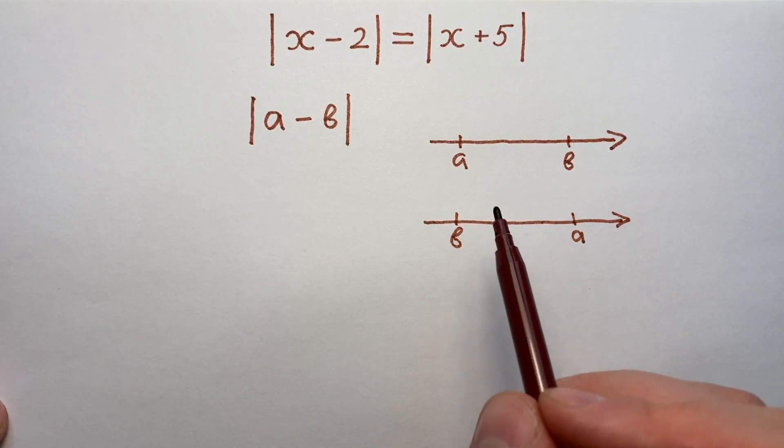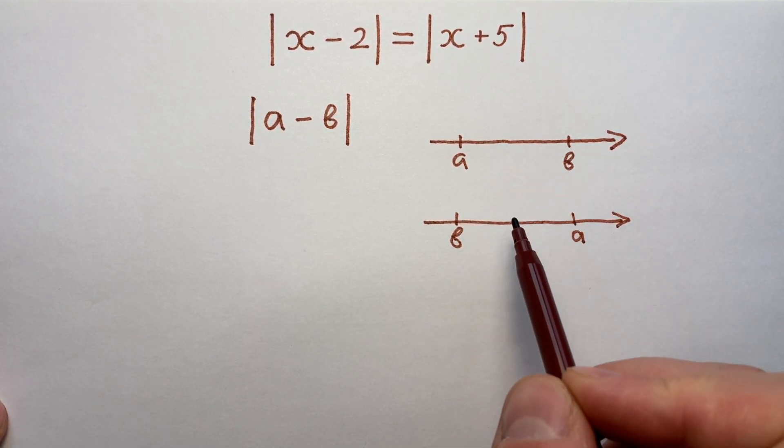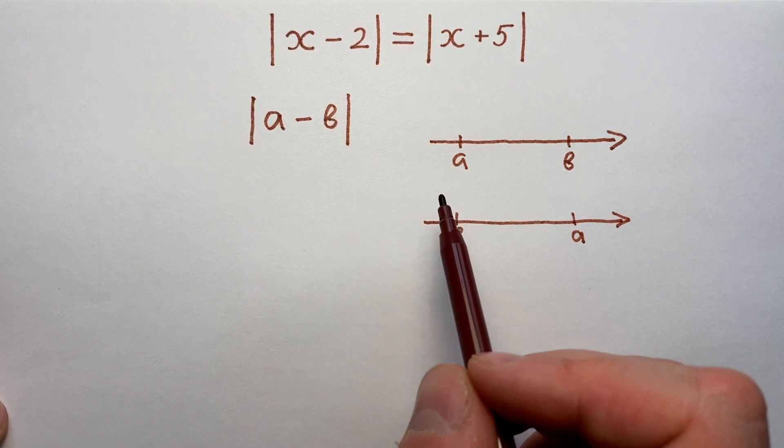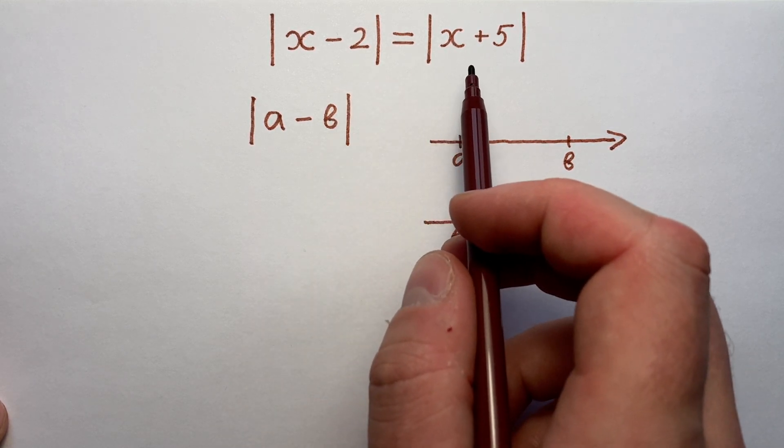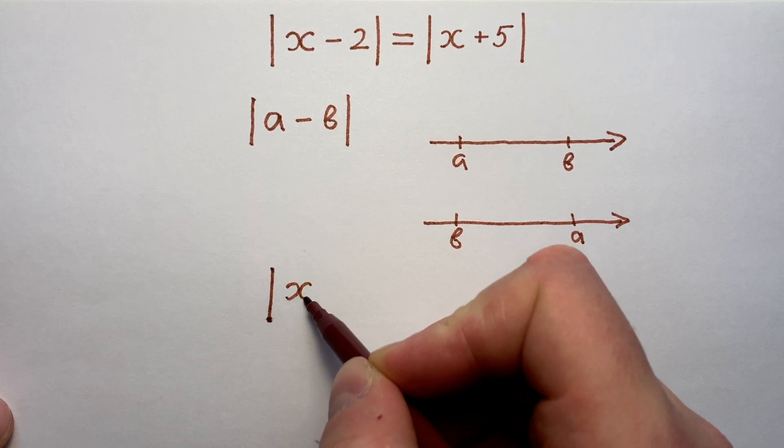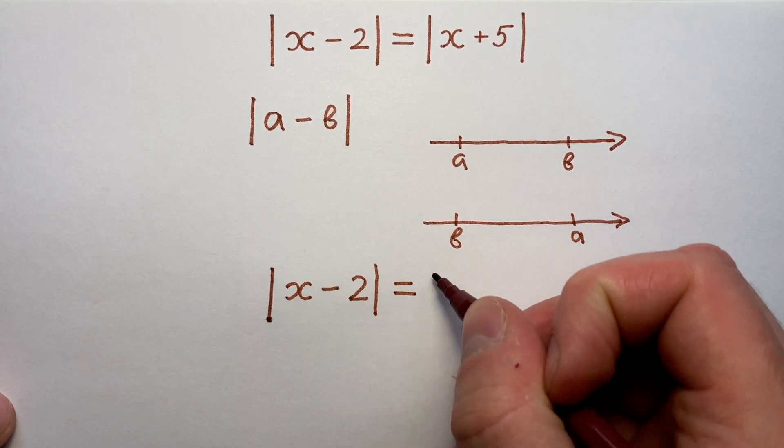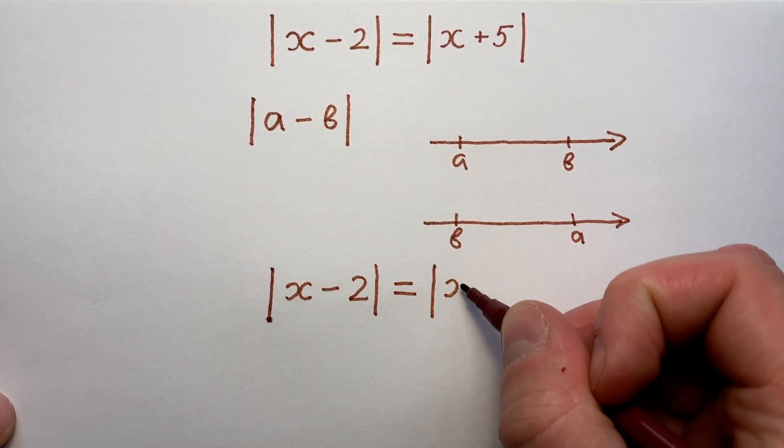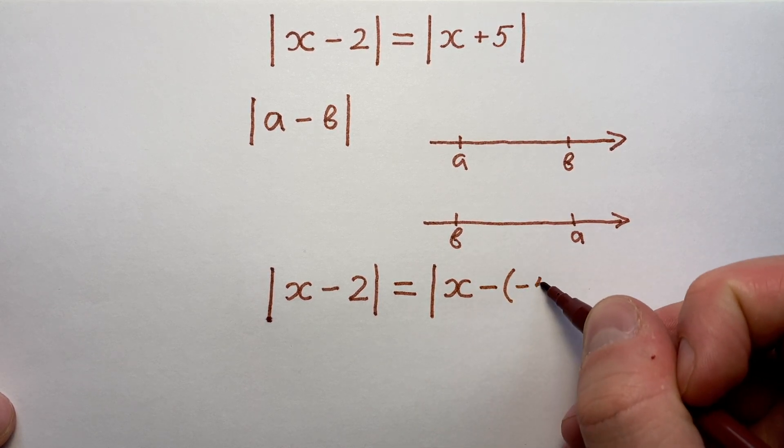So, if we want to use geometrical meaning of modulus, we have to write each of these two expressions as a difference. So, the first modulus doesn't change. But the second modulus we can write like X minus minus 5.